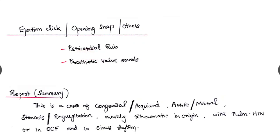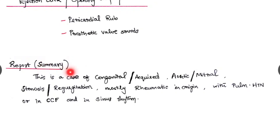The summary or report should be like this: This is a case of congenital or acquired valvular heart disease, that is can aortic or mitral with a stenosis or regurgitation in the valve, mostly due to rheumatic in origin, with or without pulmonary hypertension, or whether the patient is in congestive cardiac failure or without the congestive cardiac failure.